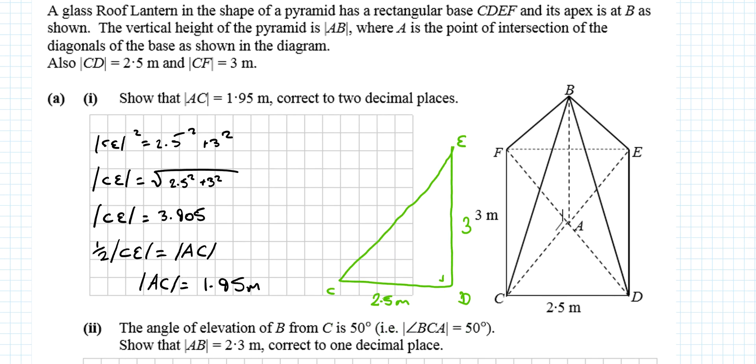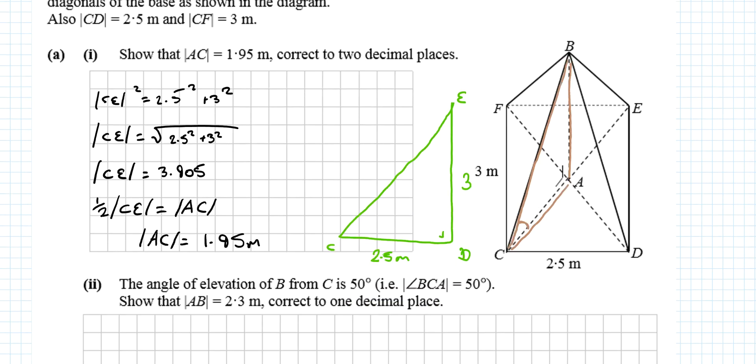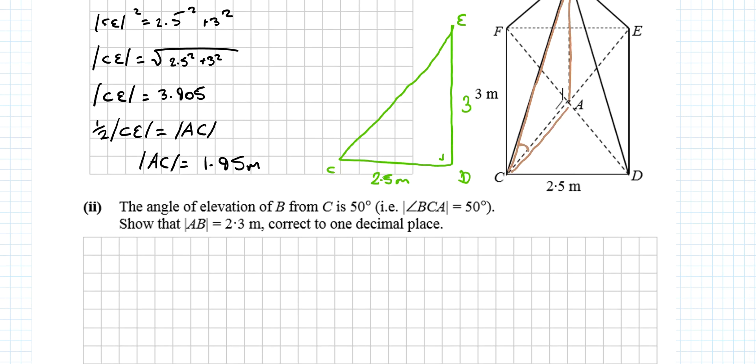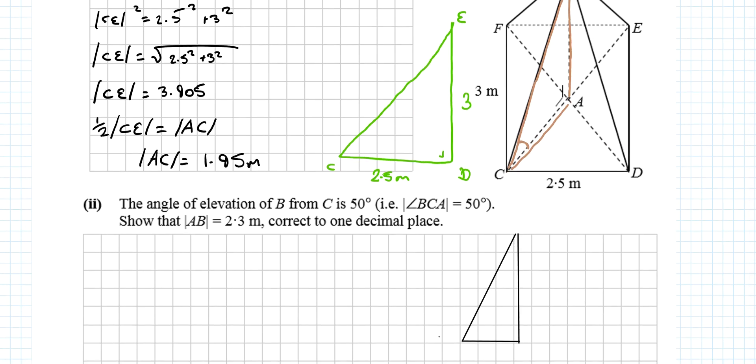Then it says the angle of elevation of B from C is 50 degrees, so angle BCA is 50 degrees. We know this length and this angle. Show that AB is 2.3 metres. We actually have a right angle triangle. I know it doesn't look like one, but if we draw it out: C, A, B. The angle BCA is 50 degrees, and this length is 1.95.